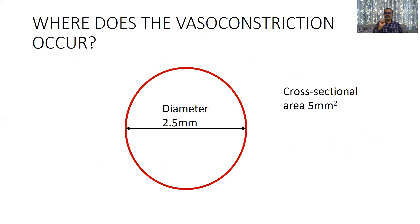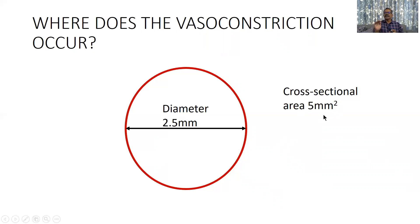We mentioned the 2.5 mm diameter pre-capillary artery. How do we know this? From an HRCT study. Before going into that study, note that 2.5 mm diameter corresponds to a cross-sectional area of 5 mm². So from now on, rather than 2.5 mm, we will refer to it as 5 mm² cross-sectional area. Let us see this very interesting study.